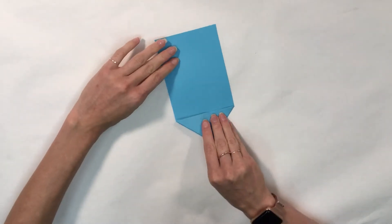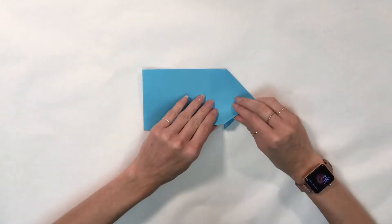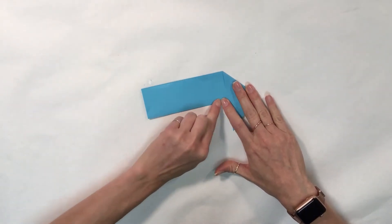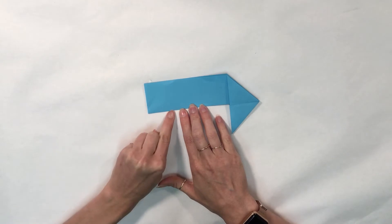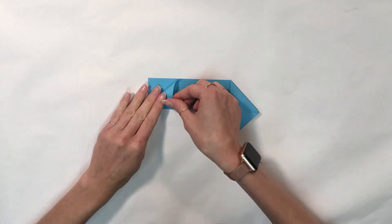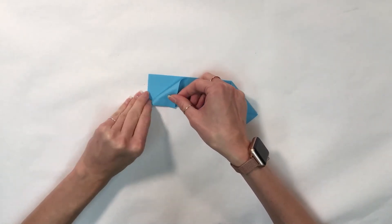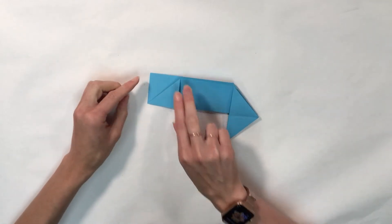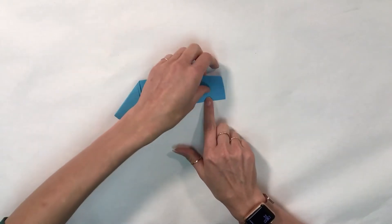Then I'm going to flip my paper over and fold in half. Then I'm going to fold the top corner down to the edge. And repeat for the other side.